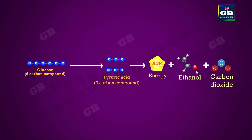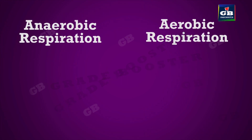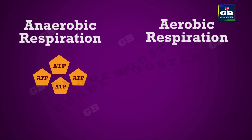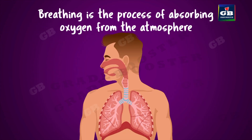In organisms like yeast, during anaerobic respiration, pyruvic acid molecules are converted into ethanol. This process is called alcoholic fermentation. The energy that is released in aerobic respiration is greater than the energy released in anaerobic respiration. But for the process of aerobic respiration, a continuous supply of oxygen is needed. But how do aerobic organisms get the continuous supply of oxygen? It is done by breathing.